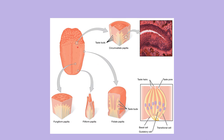The cells on the tongue regenerate fairly quickly. We've all experienced burning our tongue on hot pizza — that nice gooey cheese burns some of the cells on the surface. But they are epithelial cells and regenerate very quickly. Within a few days, your tongue, which was initially sore from the burn, is back to normal.